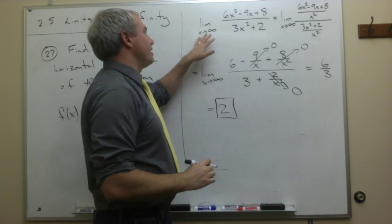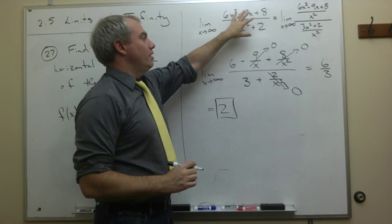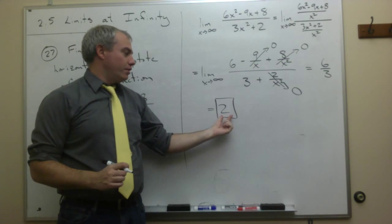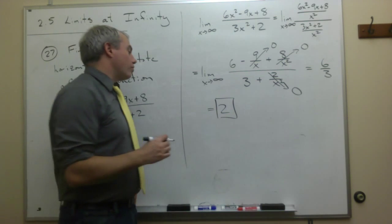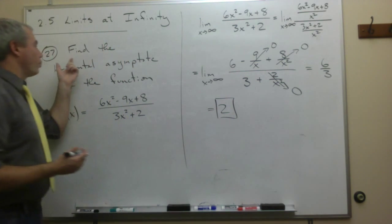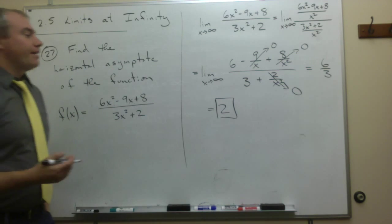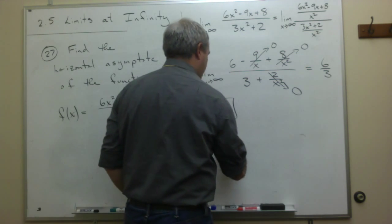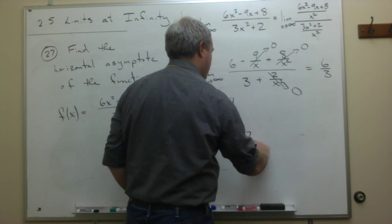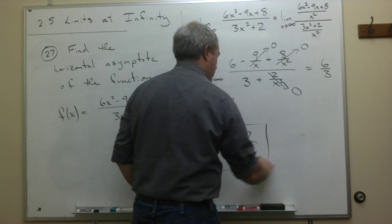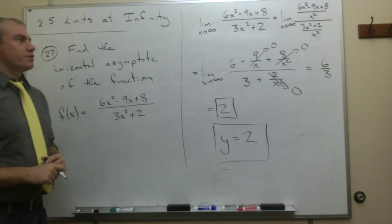So I found this limit as x goes to infinity, it ends up being 2, and now I can write the answer to the problem, which is what's the horizontal asymptote of the function, and that is just y is equal to 2, and that's my horizontal asymptote.